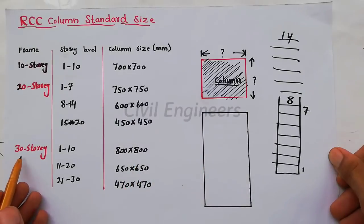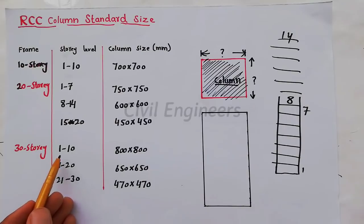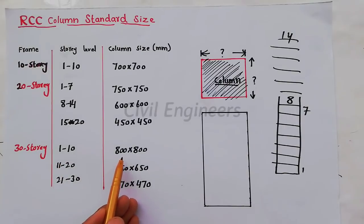For 30 stories, from 1 to 10, this is from the start. For 30 stories, from level 1 to 10, we have to take 800 millimeter by 800 millimeter size of RCC column. After that, from 11 to 20, we have to take 650 millimeter by 650 millimeter.